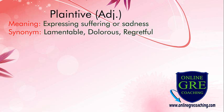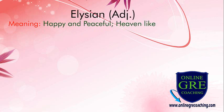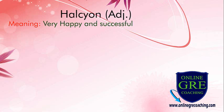Synonyms for plaintive are lamentable, dolorous and regretful. Next word is supersede, means to replace someone or something. Next word is allusion, means happy and peaceful, heaven-like. Next word is halcyon, means very happy and successful. Now friends, let's start our story.